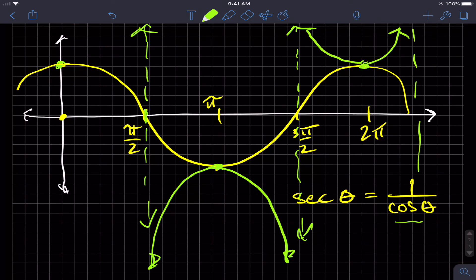There's an asymptote over here somewhere, and there's an asymptote over here somewhere. So that's the cosecant and secant functions.